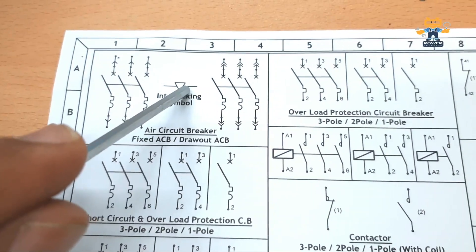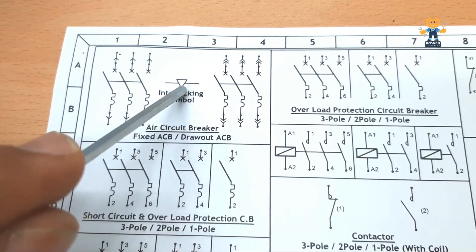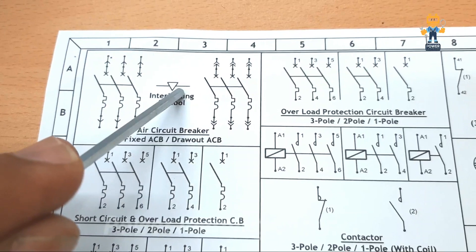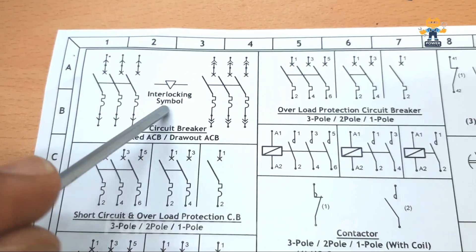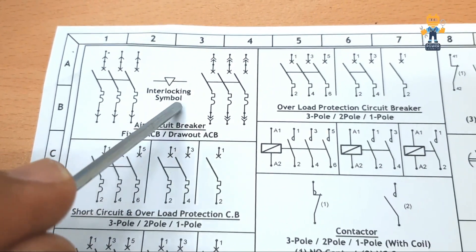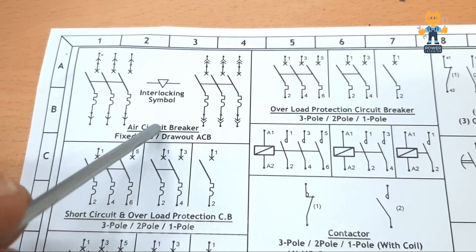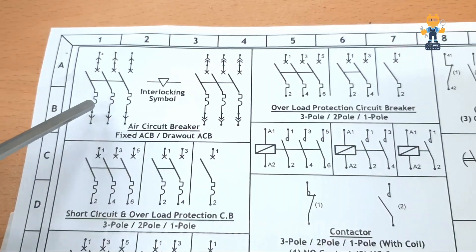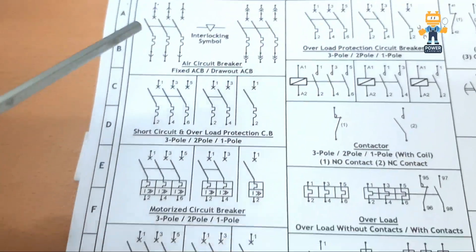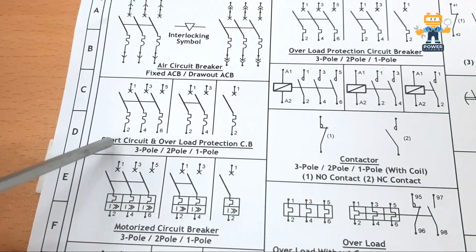If you are using two ACBs for two sources and want to interlock them, you will find this interlocking symbol. This mechanically protects so that both breakers will not turn on together — only one breaker can be on at a time.